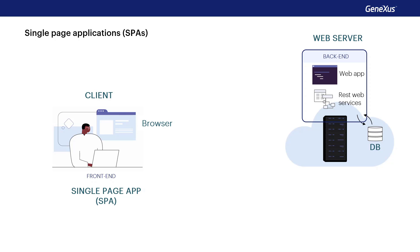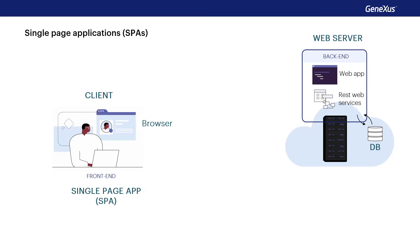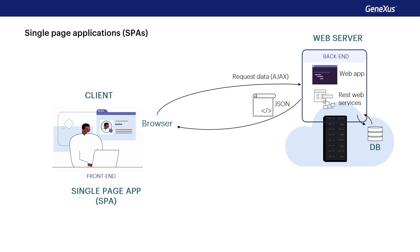To this end, the code on the server includes services — programs that respond to requests made by the client, like retrieving data from the database — but the application logic is on the client. When the browser requests a URL from the server, it responds with the page in formatted and decorated HTML code. But then the client uses AJAX to request the data from the server by invoking the corresponding API, which obtains the data from the database and returns the information in JSON format to the client. This prevents the page from reloading, thus achieving better performance and enhancing the user experience.